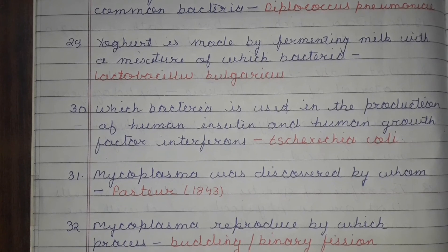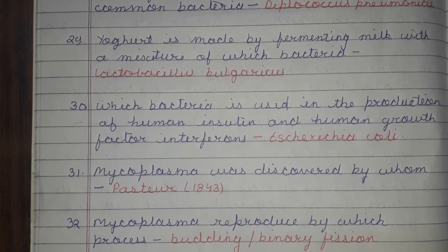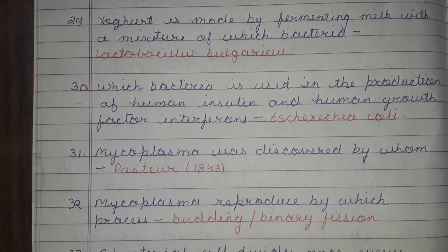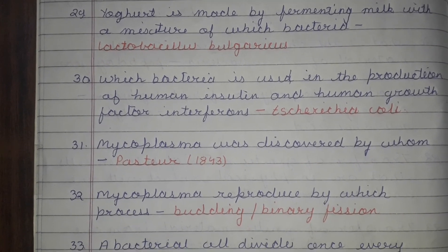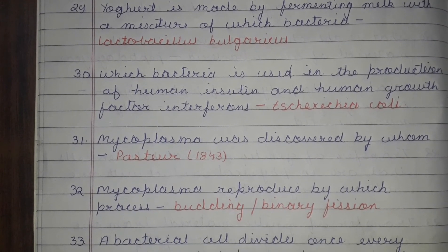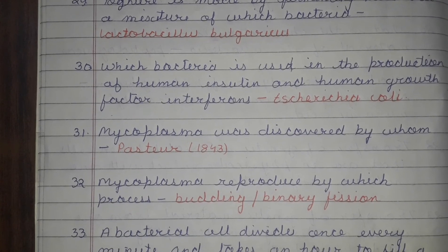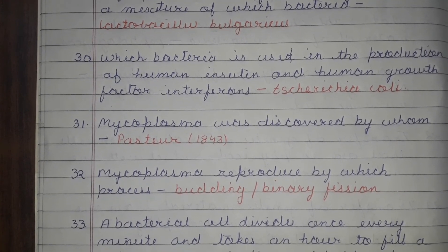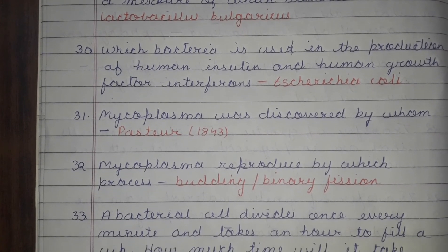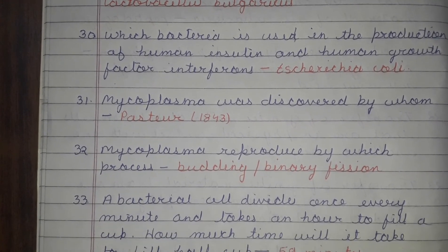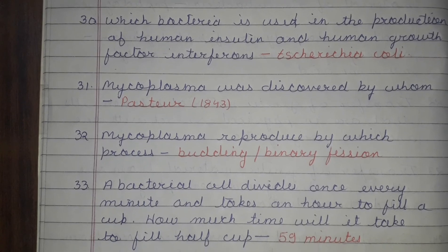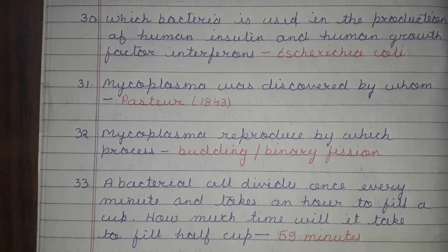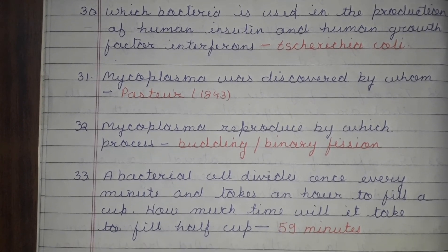Mycoplasma was discovered by whom? It was discovered by Pasteur in 1843. Mycoplasma reproduces by which process? It reproduces by budding or by binary fission.